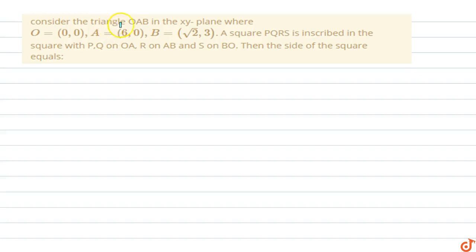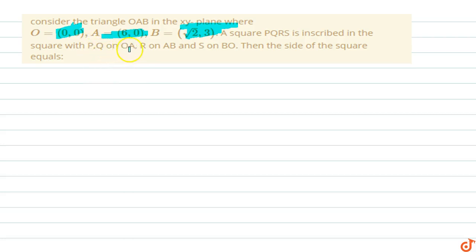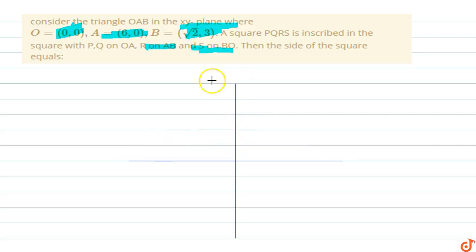In this question, we consider triangle OAB in the XY plane where O is the origin, A is the point (6, 0), and B is the point (√2, 3). A square PQRS is inscribed in the triangle with PQ on OA, R on AB, and S on OB. We have to find the side length of the square.